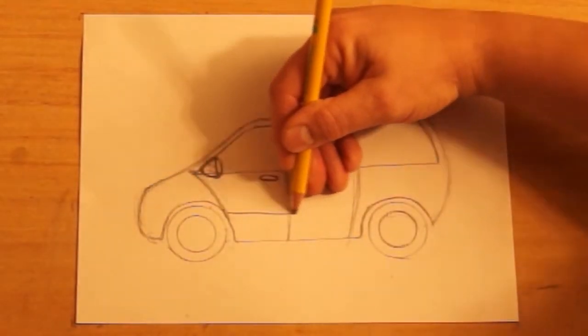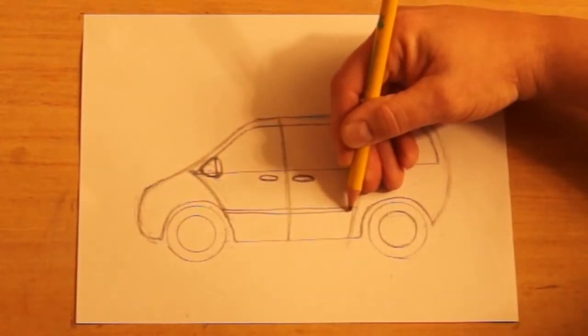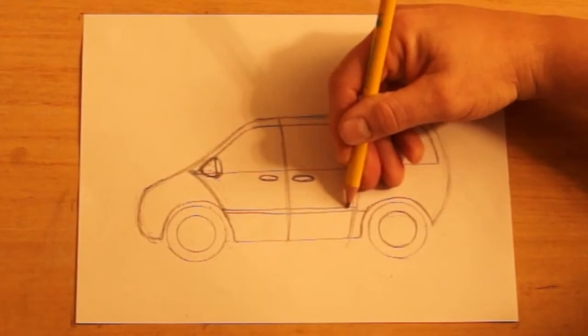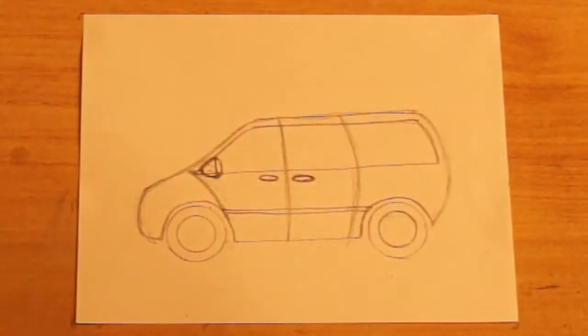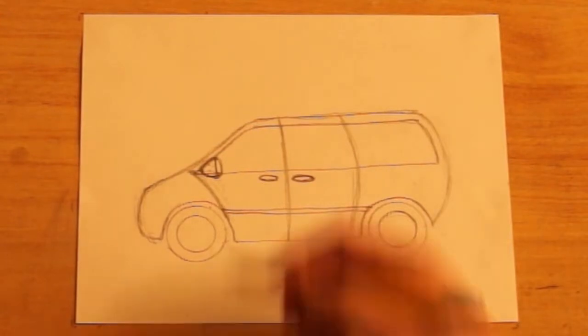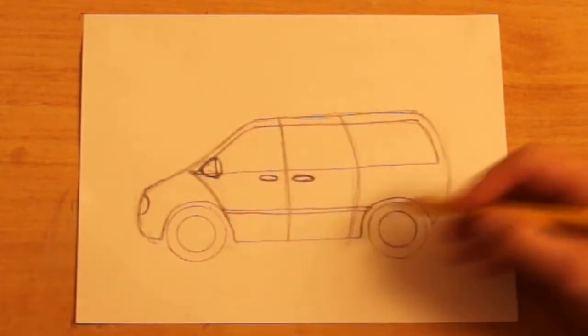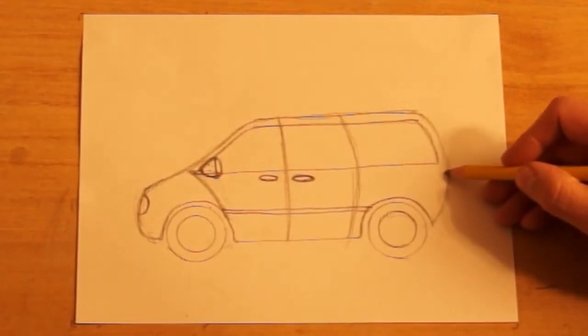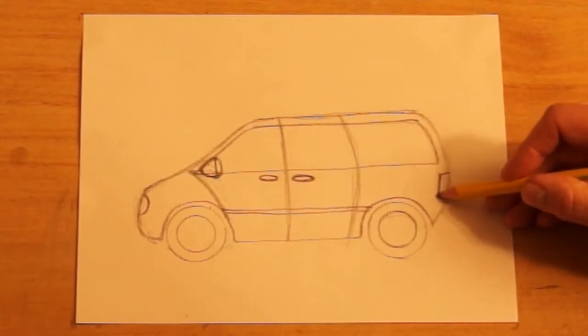Okay, I'm going to put two lines here just for the trim. Go all the way to that wheel well. And the headlight up here, a curve. We see half of the headlight. And then the tail light, we see half of it as well. And it is more like a rectangle.